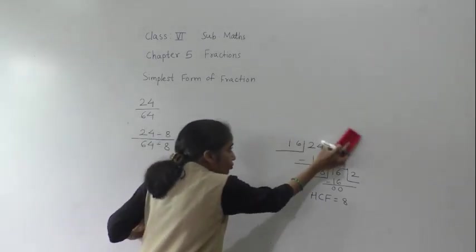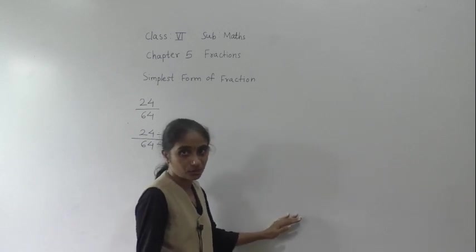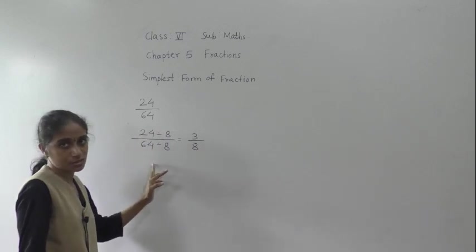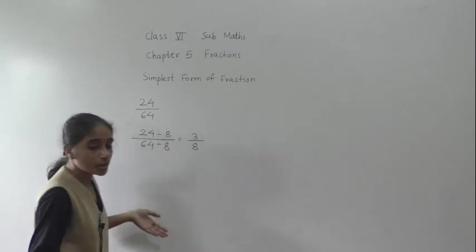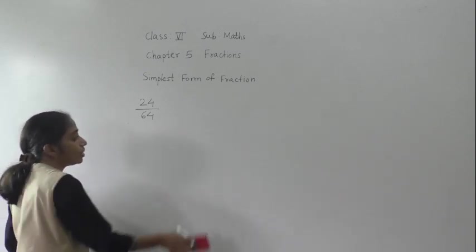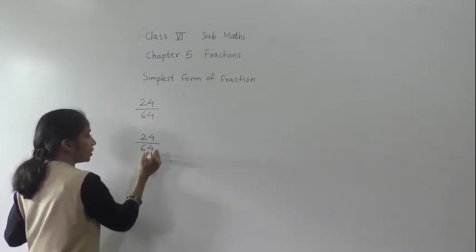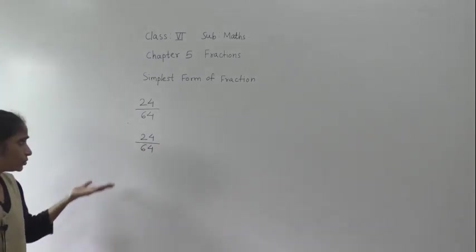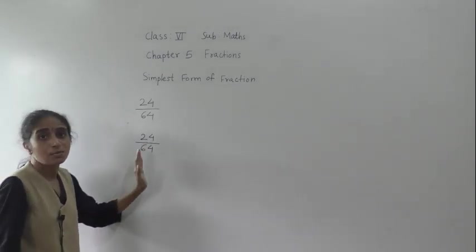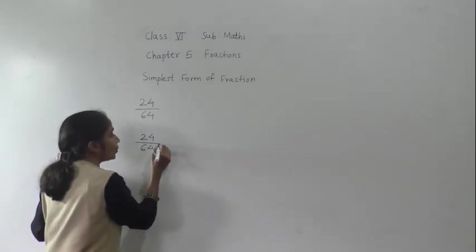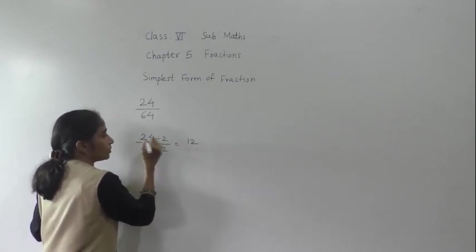Now, there is one more method. For the given fraction 24 upon 64, both numbers end in 4, so both are divisible by 2. Divide both by 2: 24 divided by 2 is 12, and 64 divided by 2 gives us 32. So we get 12 upon 32.